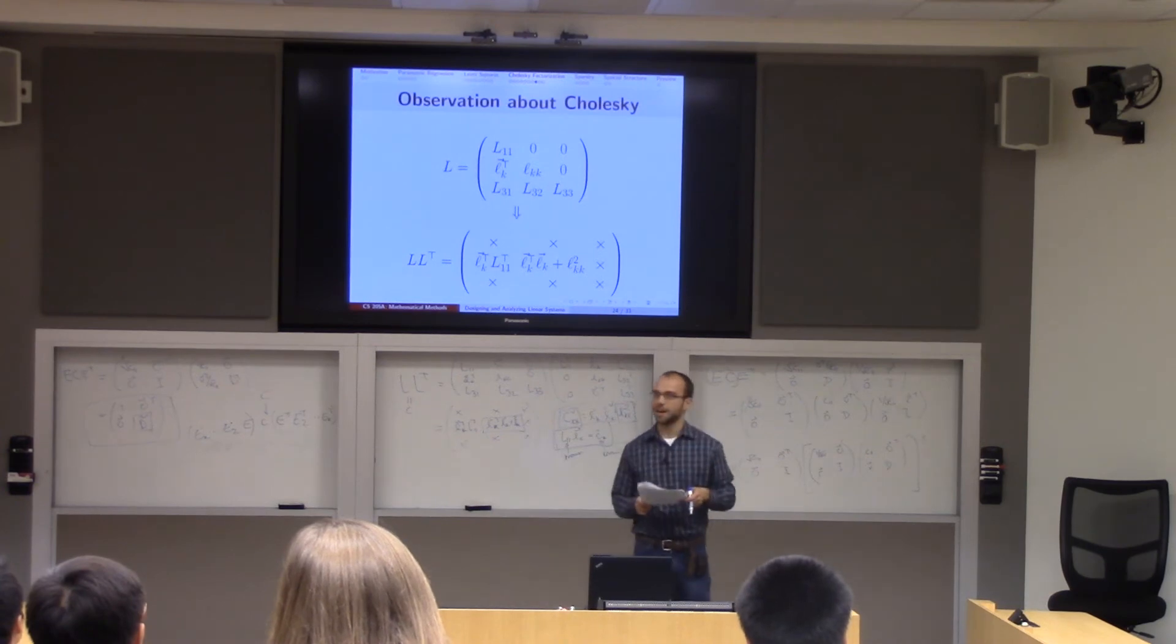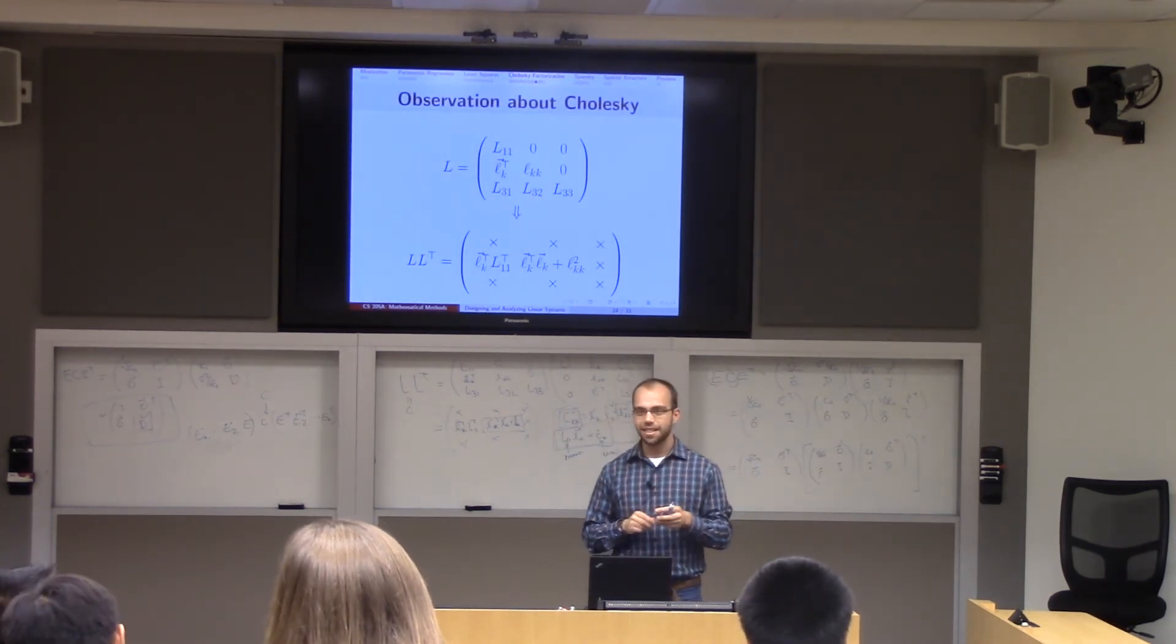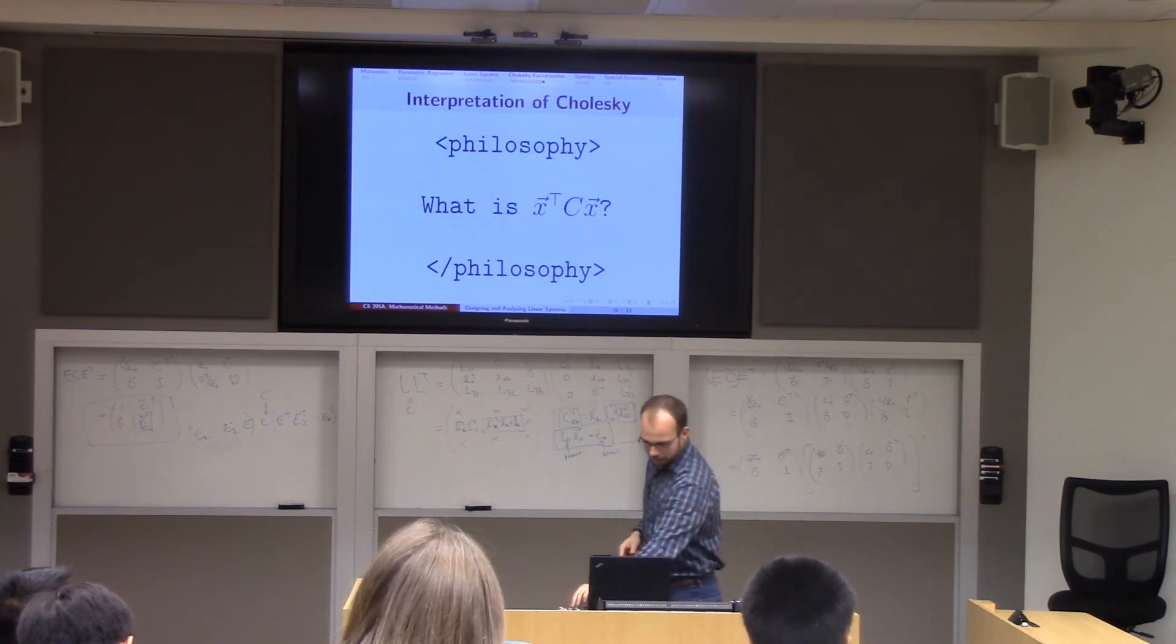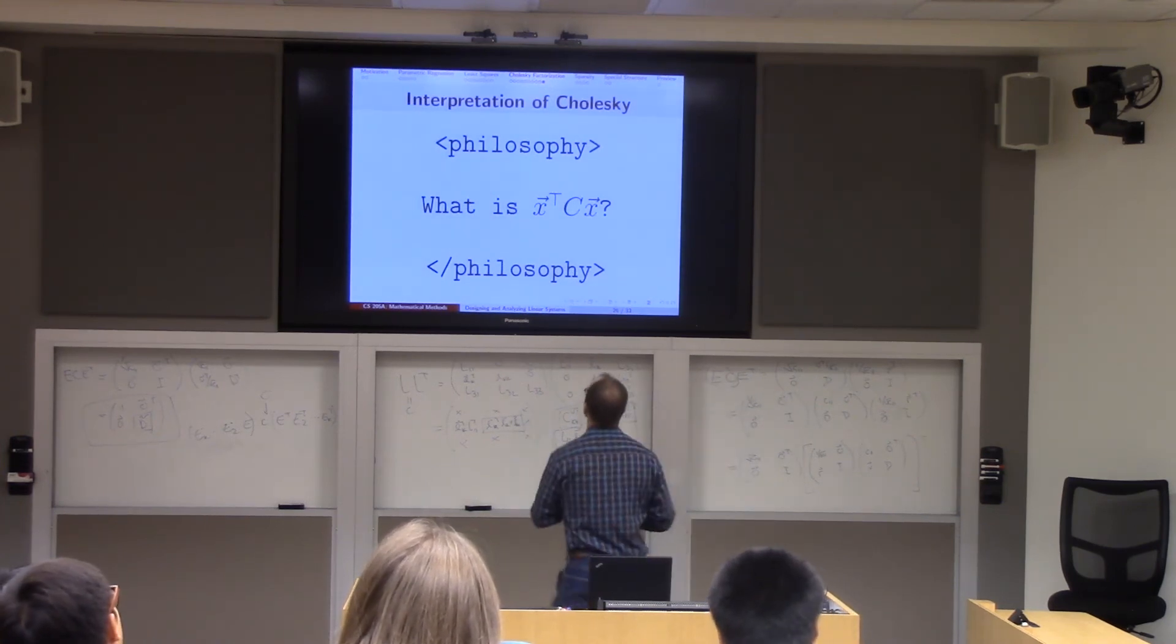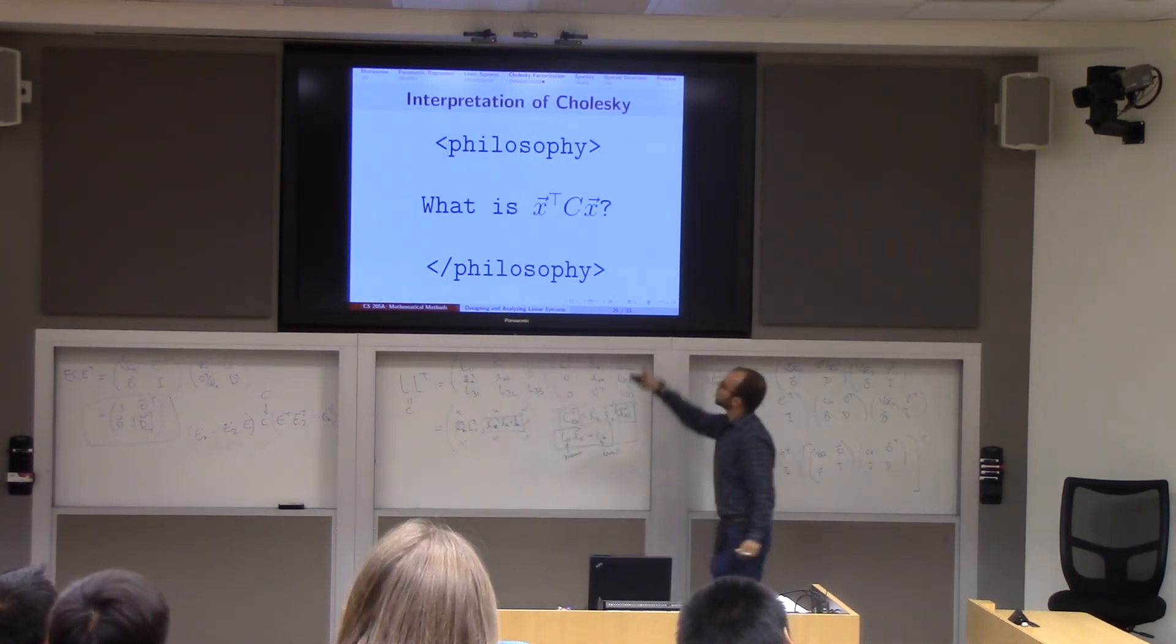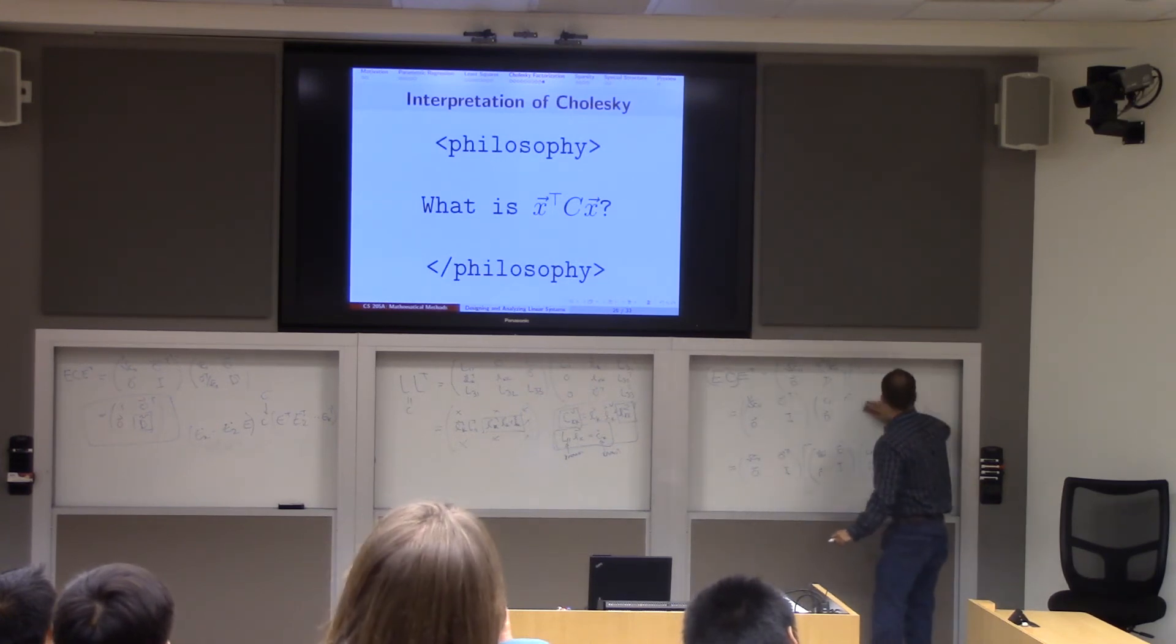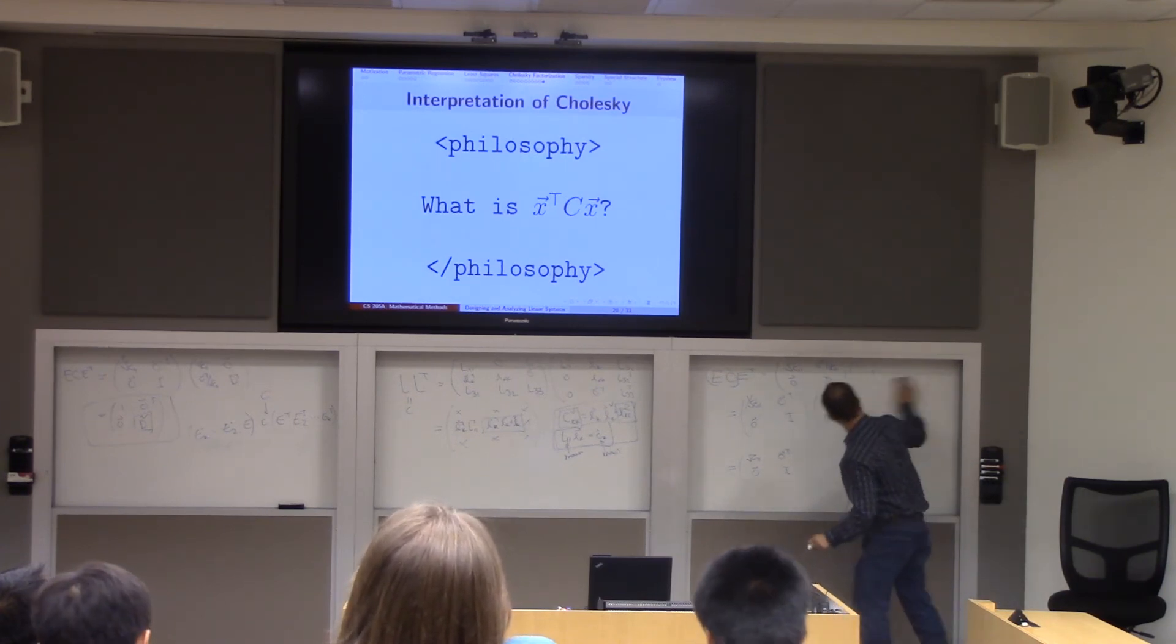Thankfully, that ends the difficult portion of our lecture. We have two minutes, which is more than enough, to talk about a couple things. Well, maybe I'll save the last couple of slides for next time. But one sort of philosophical point is that the Cholesky factorization tells you about what this quantity X transpose CX is. Right? And why is that? Let's do a bit of erasing. Maybe we'll finish with that today. And then next time we'll talk about sparsity.